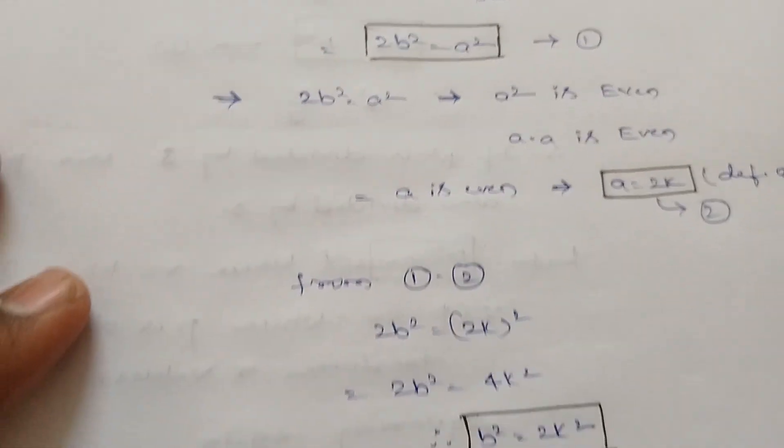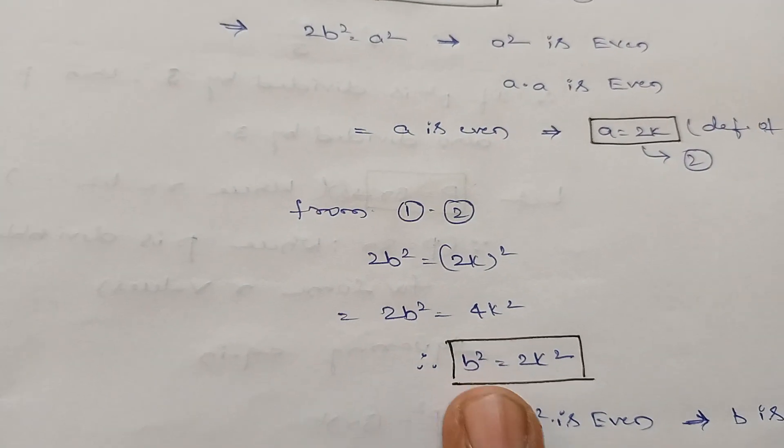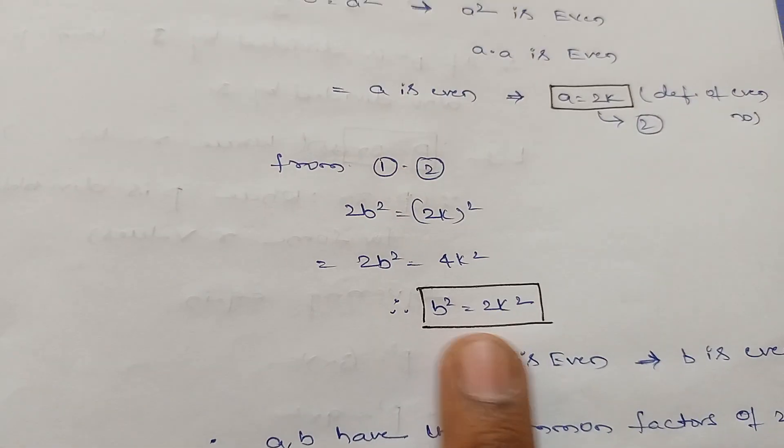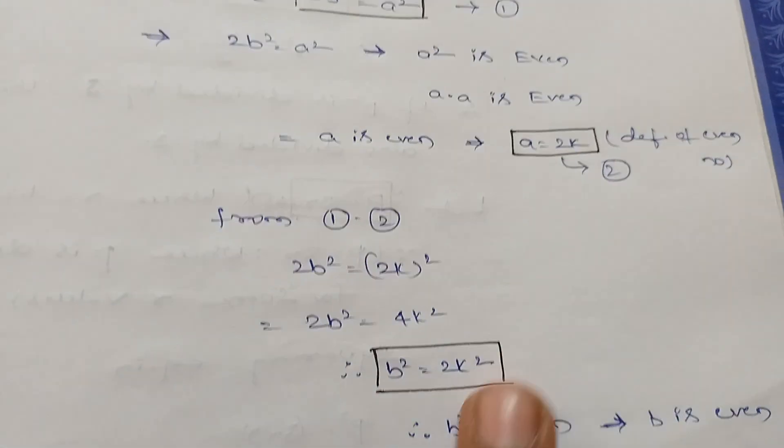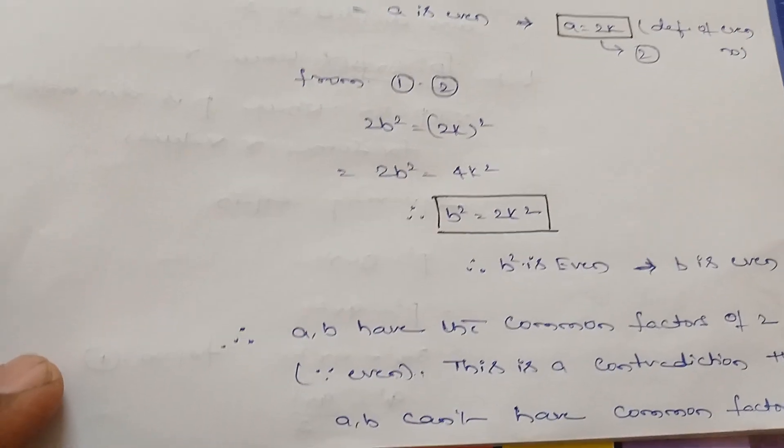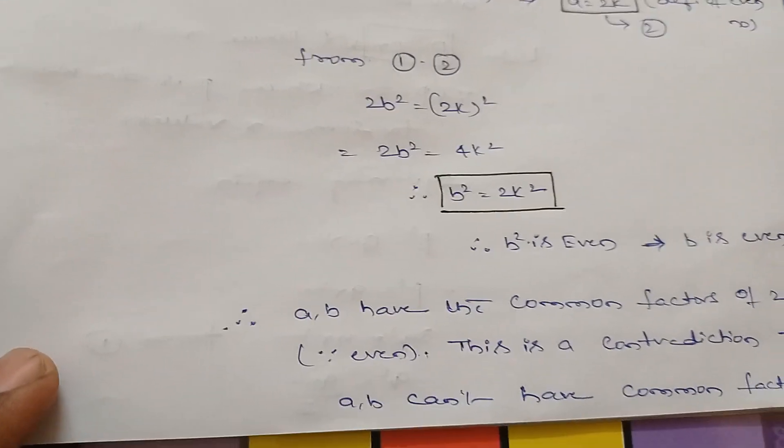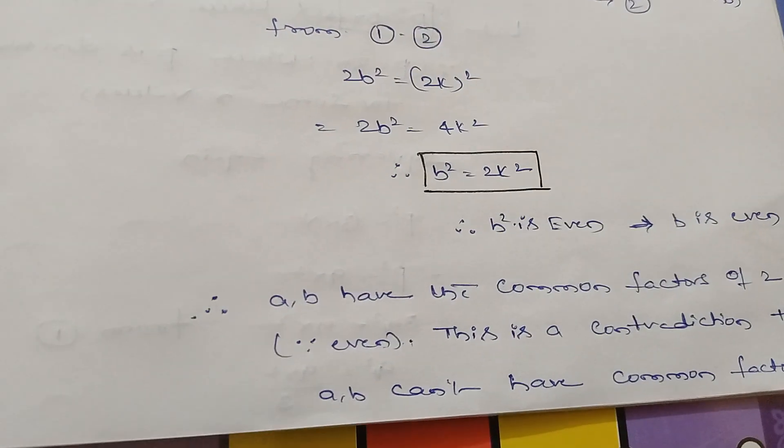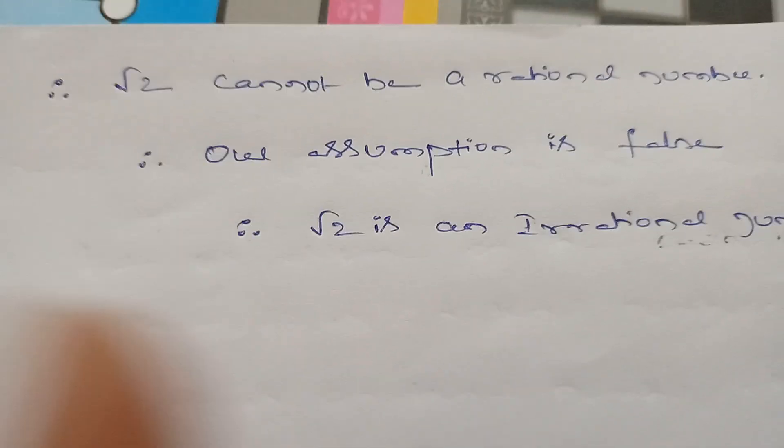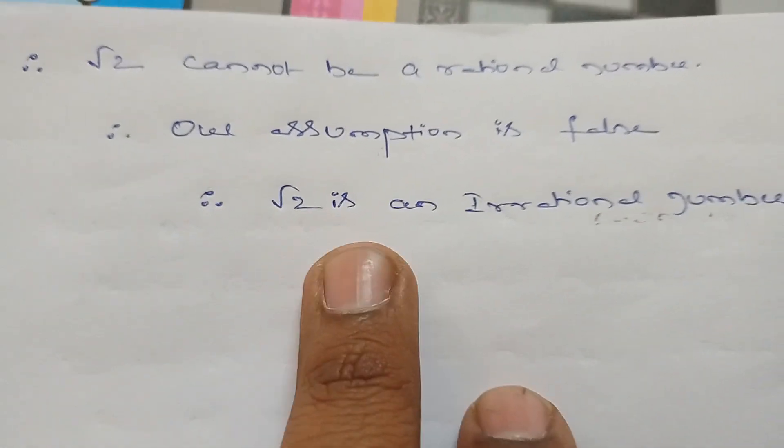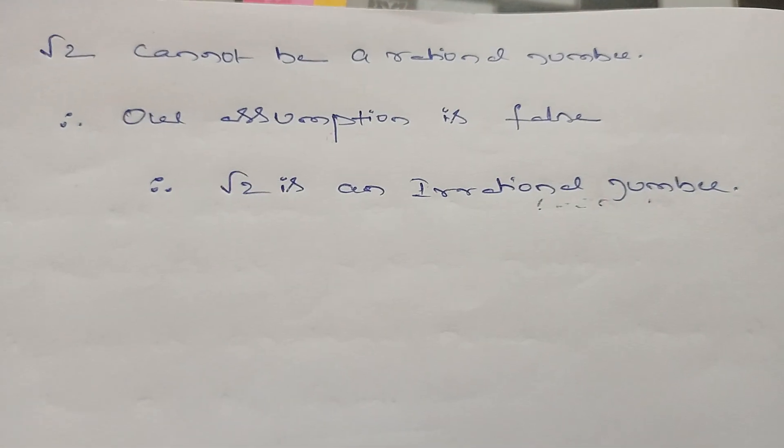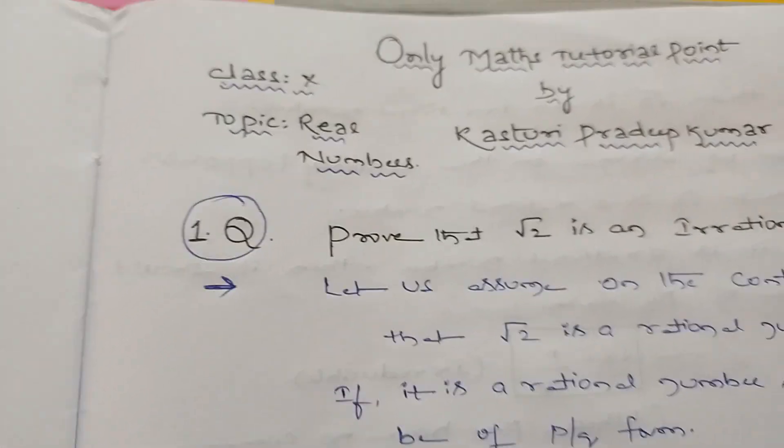But here by assumption, we got b is even and a is also even. Therefore, what we have assumed is wrong. Therefore, √2 cannot be a rational number. The assumption is false, therefore √2 is an irrational number.